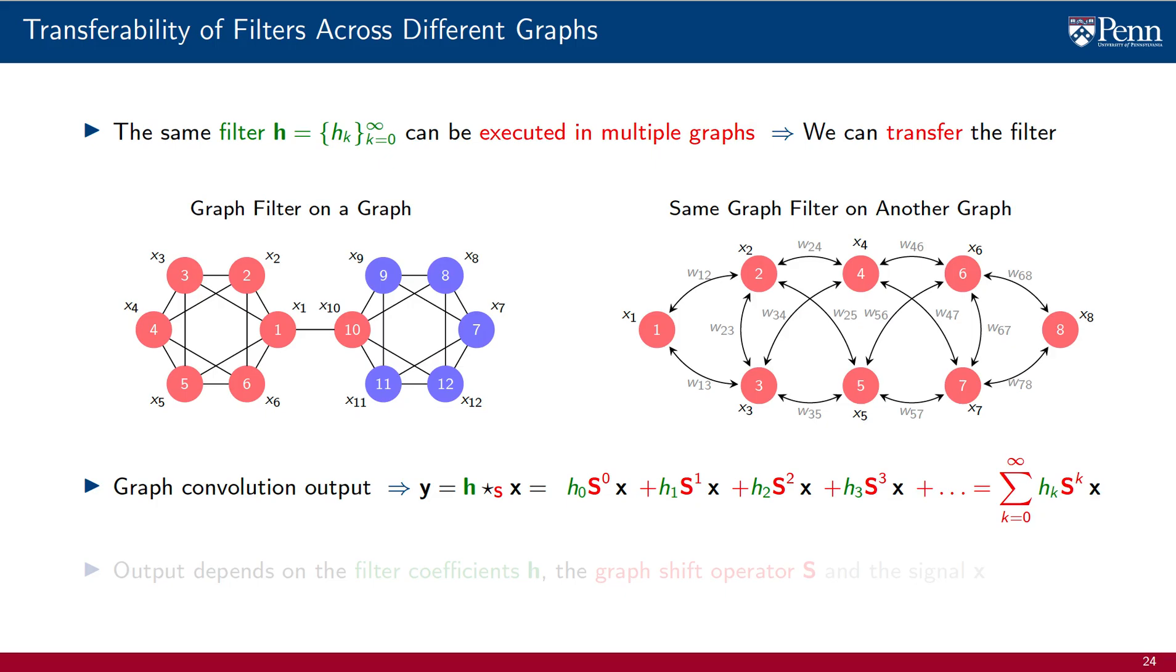Upon completing the execution of the filter, the convolutions could be quite different because the graphs are different. But it is nevertheless possible to move the filter from one graph to another. This is true no matter how different the graphs are. They can have different neighbors, different weights, different numbers of nodes even.